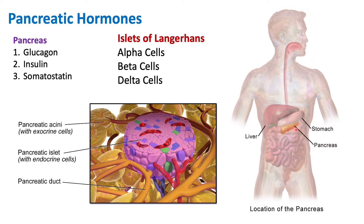The endocrine process of the pancreas involves the release of glucagon, insulin, and somatostatin into the bloodstream. The pancreas is unique because it can act as both an exocrine and endocrine organ. The area of the pancreas responsible for hormone production and release is known as the islets of Langerhans, which contain three different types of cells: alpha cells, beta cells, and delta cells.